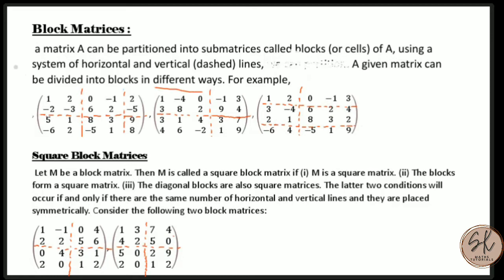For example, this is one form, this is the second form, and this is the third form. The matrix can be of any order. Here the matrix is of order 4×5, and this can be partitioned in any of these possible ways.